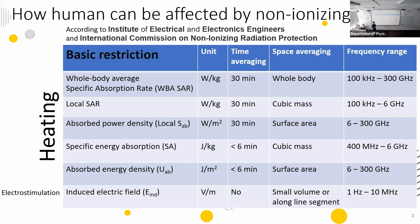For frequencies higher than 6 GHz, the penetration depth is low, so you don't need to calculate SAR in the volume of your body. Instead, you need to calculate the absorbed power density at the surface of your body, and you average it over a surface area of 4 cm² or 1 cm², depending on the standard.